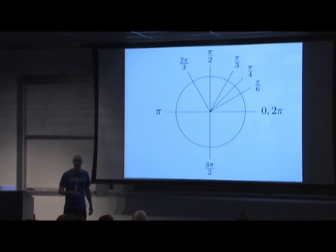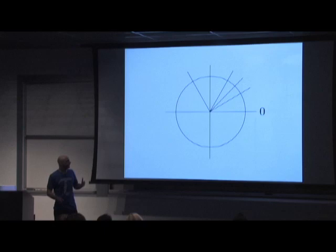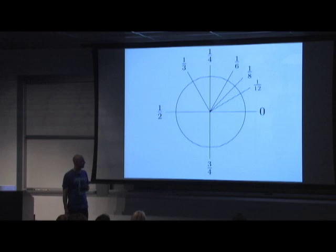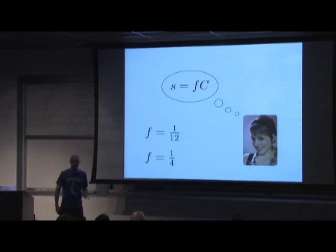These are the special angles in radians in terms of pi. You may recall memorizing these special values in high school trigonometry. But if you think about what these angles really are: this is a 30-degree angle, but it's really a twelfth of a turn around the circle. A right angle is really just a quarter turn. And so on: a third, a half, three-fourths, and then all the way around. This suggests writing the arc length as a fraction of the full circumference.